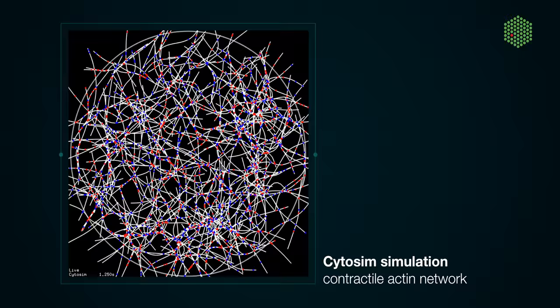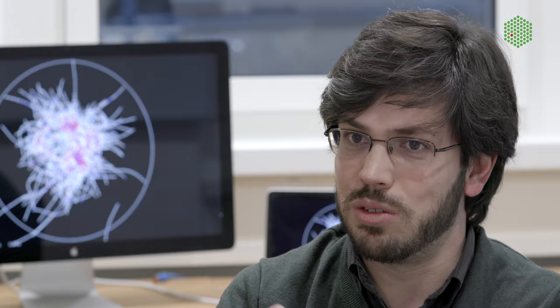If you start to add a little bit of crosslinkers to the mixture, then you can see that some of those fibers start to bend, and through this buckling process you start to get some contraction of the network. If you put the same amount of crosslinkers as you have motors, you can see the system really contracts quite well.